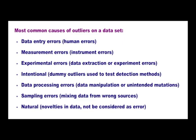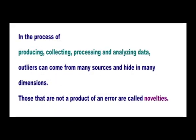Next we will see the most common causes of outliers in a data set. The first is data entry errors caused by human error. Next is measurement errors caused by instrument errors. Then experimental errors caused due to data extraction or experiment errors. Next is intentional outliers, also called dummy outliers, used to test deduction methods. Then data processing errors caused by data manipulation or unintended mutations. Next is sampling errors due to mixing data from wrong sources. And the last one is natural outliers, also called novelties in data, which cannot be considered as errors.